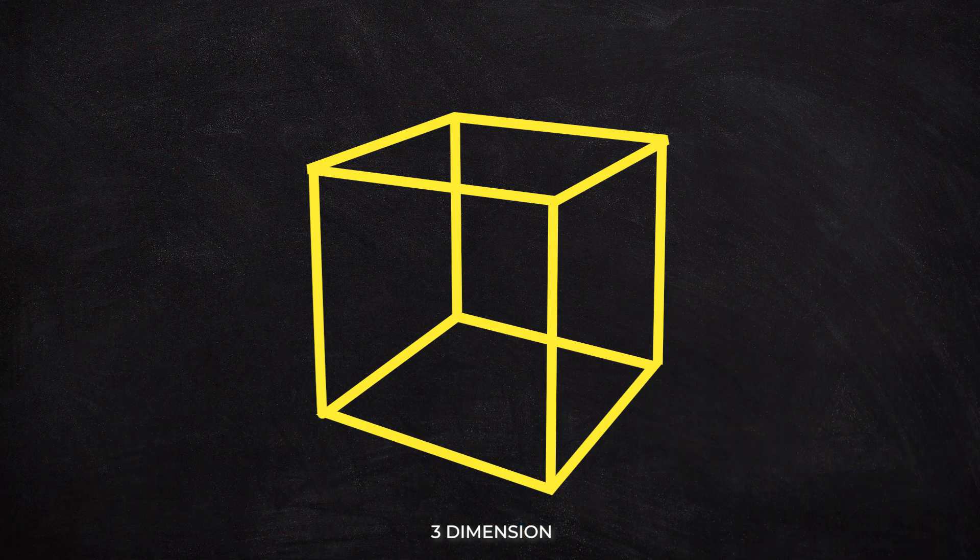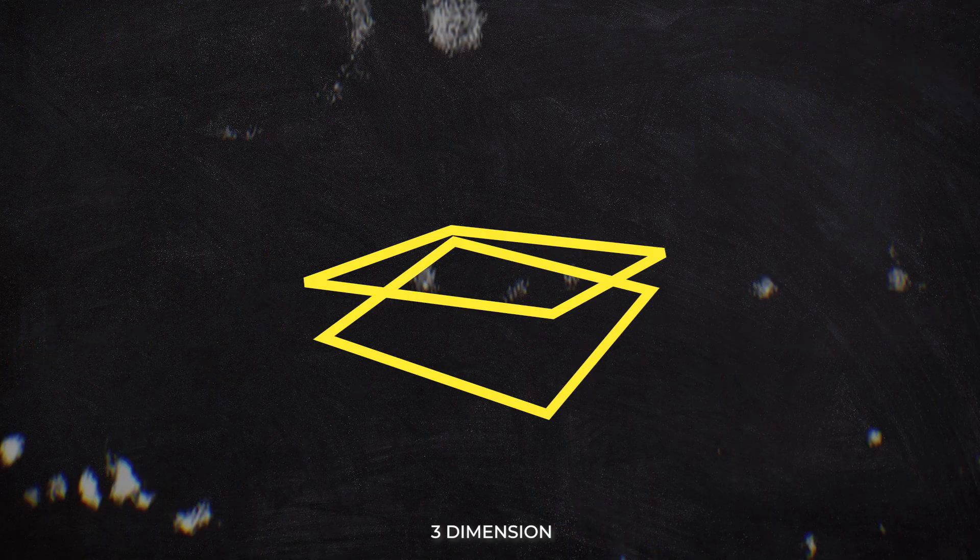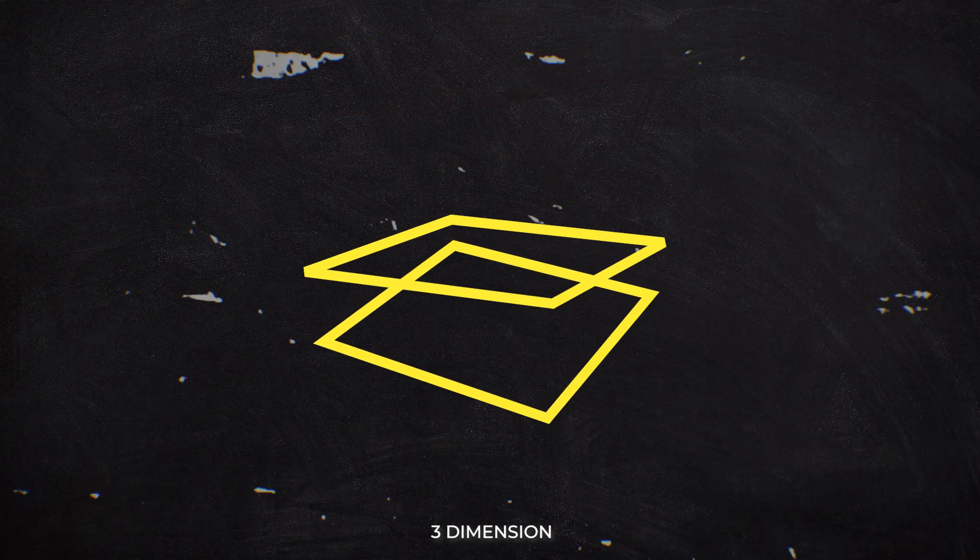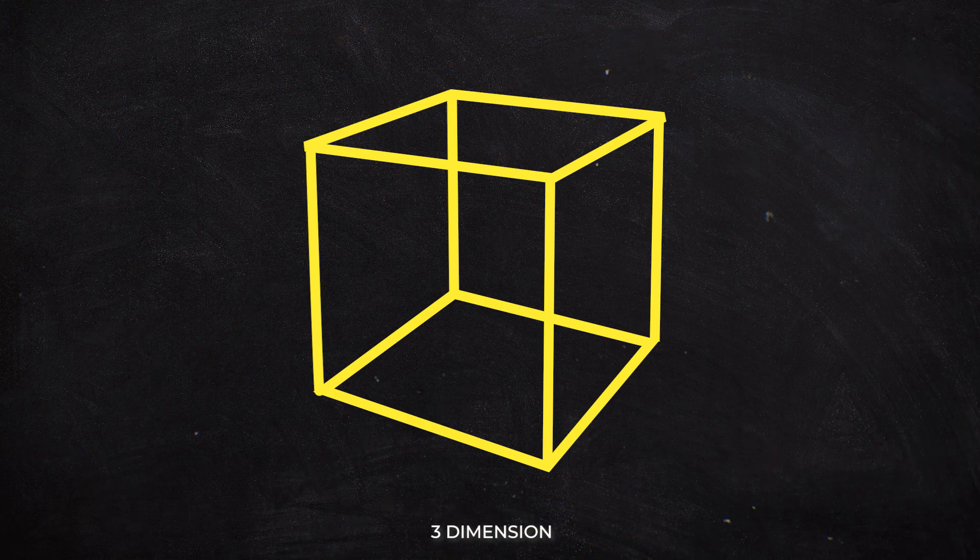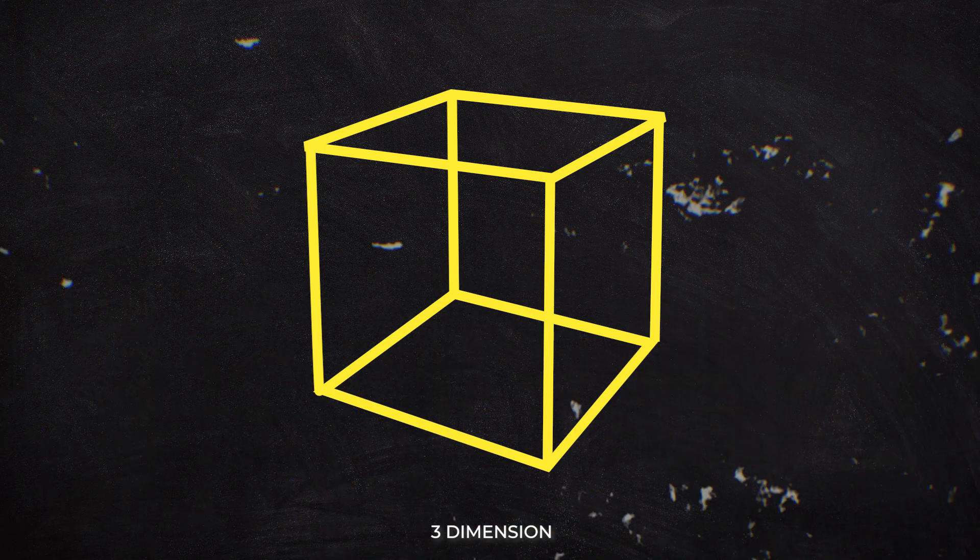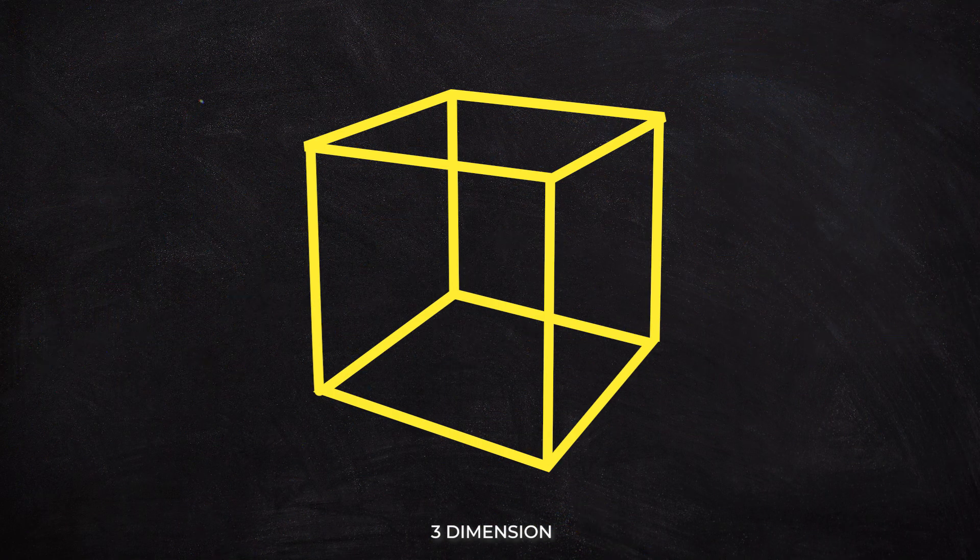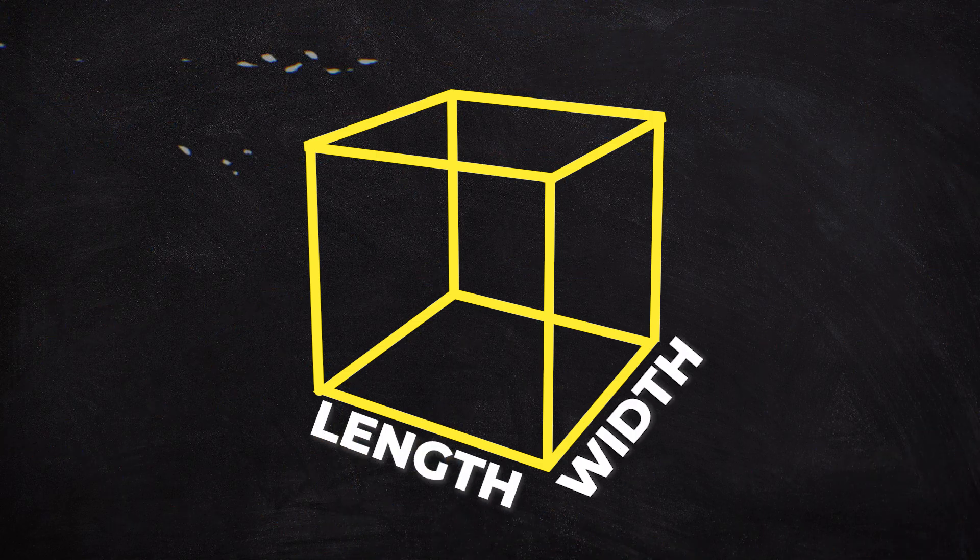The third dimension is a cube. To make a cube, you take two squares and move them apart at right angles in the third dimension, then join the matching sides of the squares together with other squares. The cube has three dimensions, length, width and height.